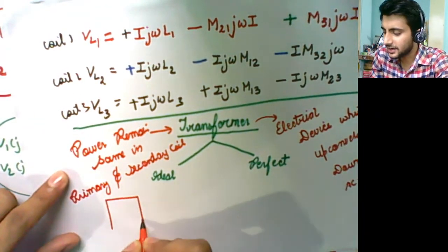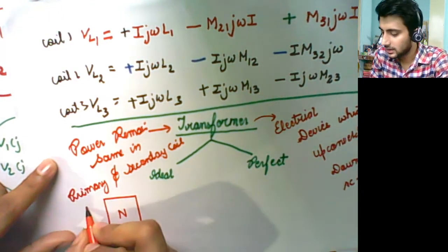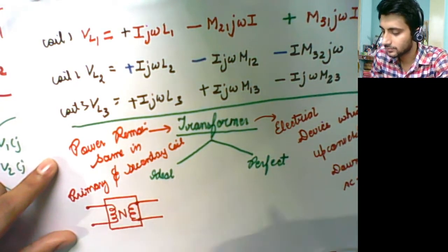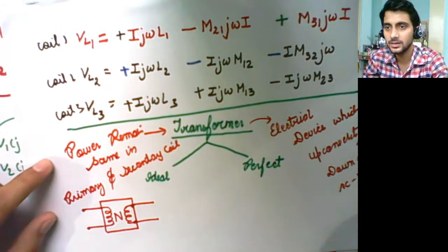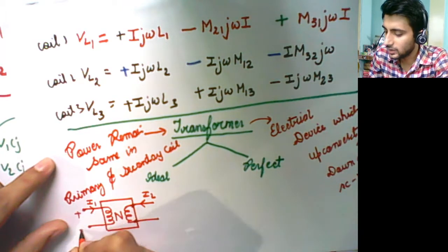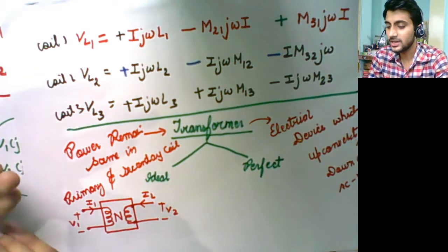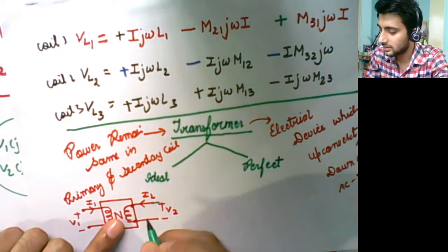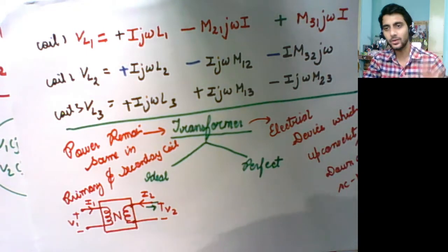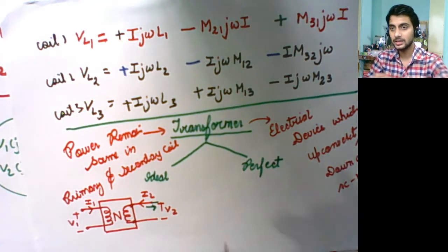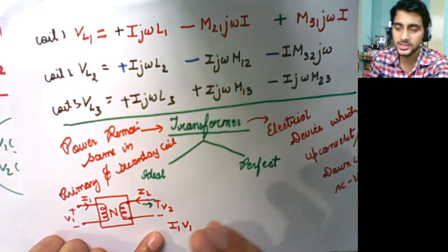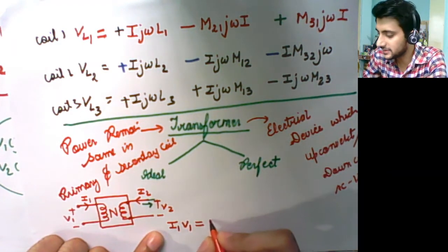We can consider a transformer to be a two-port network — two wires on each side. There are two coils coupled through a magnetic core. Current I1 flows into the primary and I2 into the secondary; V1 is the primary voltage and V2 is the secondary voltage. The input power is I1·V1 and it has to equal the output power I2·V2.